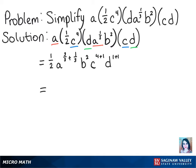So once we add those exponents, our final answer will be 1 half times A to the 4 thirds power times B squared times C to the 5th power times D squared.